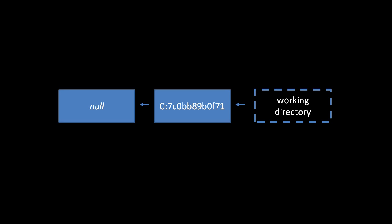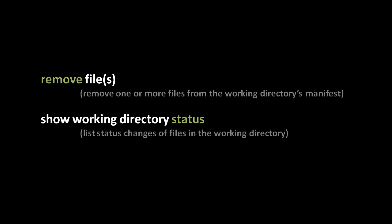When it comes time to remove a file from your working directory, if that file was present in the parent change set, you shouldn't just simply delete the file because Mercurial will be confused — it'll expect to find this file and consider it missing. Instead of using the rm command, you should use Mercurial's remove command, which will not only delete the file but remove it from the working directory's manifest so it won't be included in the next commit. We'll use the status command to show which files have changed, are set to be added, set to be removed, or are missing.